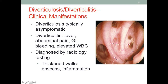People with diverticulosis do not usually report any symptoms. However, when they become inflamed, we can observe fever, abdominal pain, GI bleeding, as well as increased white blood cell count. To diagnose this, we need medical imaging to observe what is going on. Using an endoscope, we can definitely see the pouches, and we can also observe a thickened wall if there is abscess or any signs of inflammation — all of these would be evidence for the conditions.